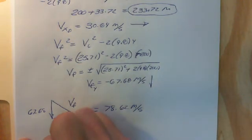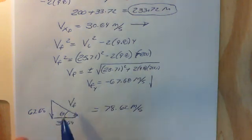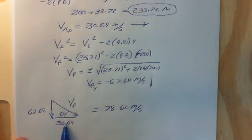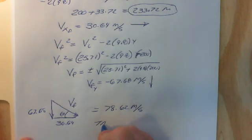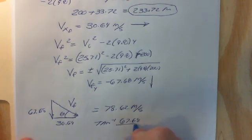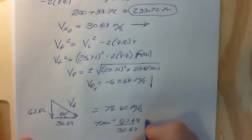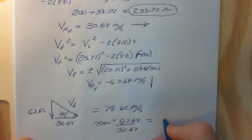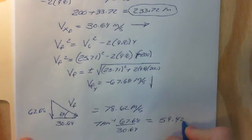Now if we want to find the angle, it's very easy. We just do the inverse tangent of 67.68 divided by 30.64. That will give us an angle of about 59.42 degrees.